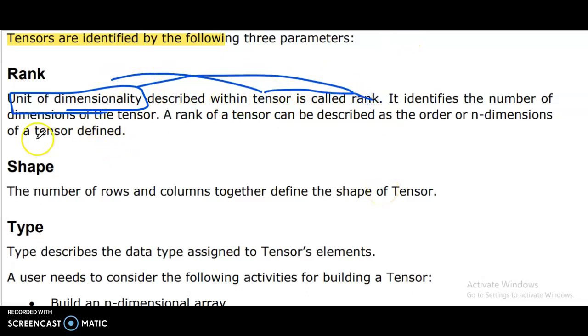It identifies the number of dimensions of the tensor. A rank of a tensor can be described as the order or n dimensions of a tensor. It defines the number of rows and columns together which define the shape of tensor.